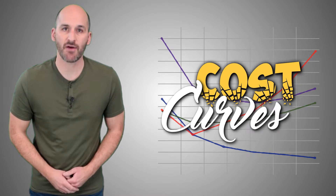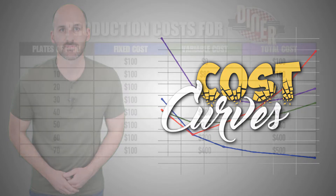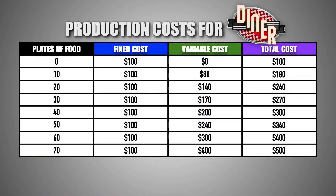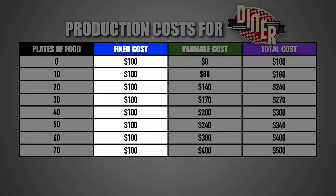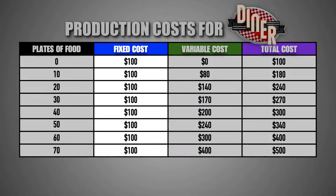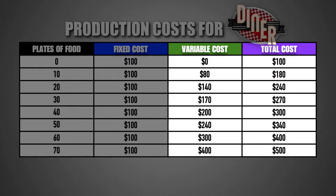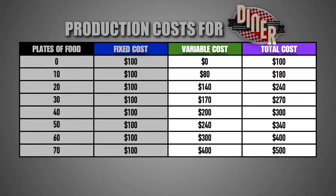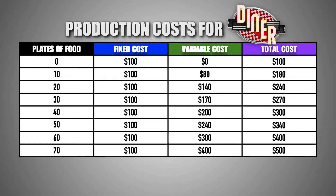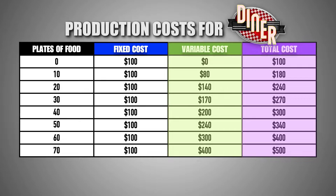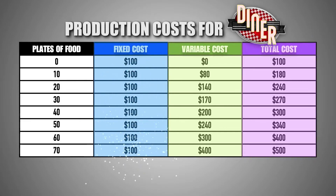Let's take a closer look at graphing cost curves. Here we can see the fixed costs, variable costs, and total costs of production at various levels of output. Notice that fixed costs remain constant at every output level, while variable costs and total costs increase as output increases. Also notice that the difference between the total cost and variable costs of production at each output level is the sum of the fixed production costs for the firm.